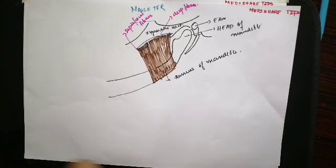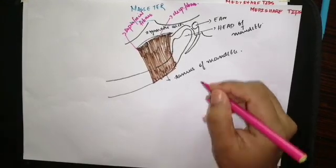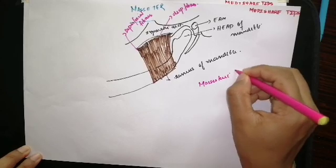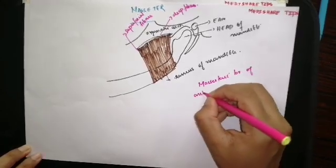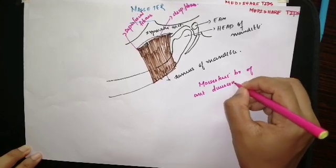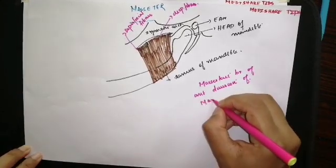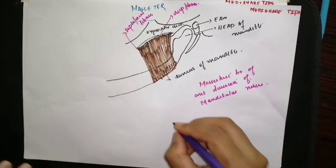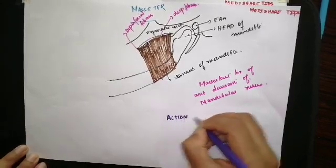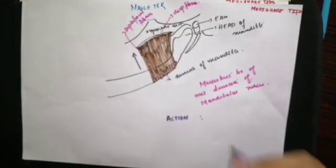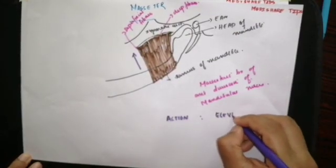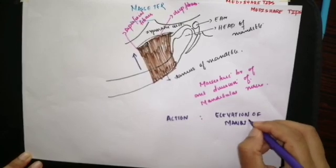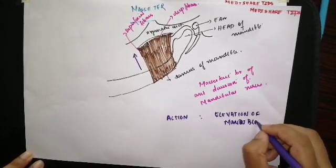The masseter muscle is supplied by the masseteric branch of the anterior division of the mandibular nerve. The action of this muscle is elevation of the mandible, which closes the mouth.